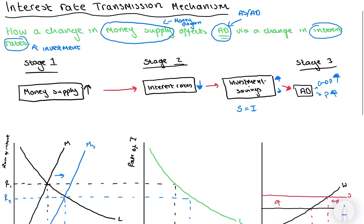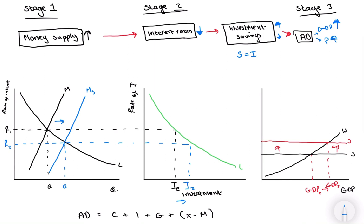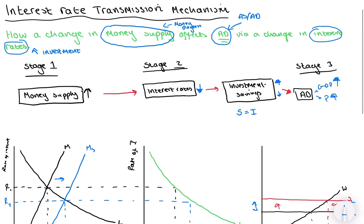And that essentially is the interest rate transmission mechanism. Now, there is something else we can add. We can add that there is going to be a multiplier effect. As you can see here, the distance between J1 and J2 is about that. However, this is a larger distance because of the multiplier effect. And you can see that in my other videos when we go over the circular flow of income. So, I hope you understand that. And thanks for watching.